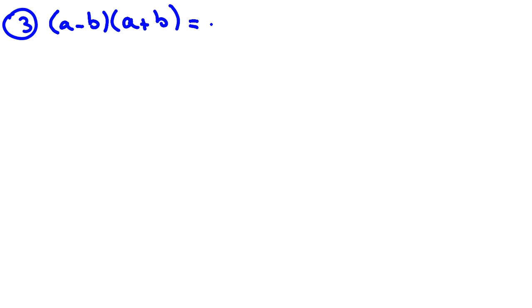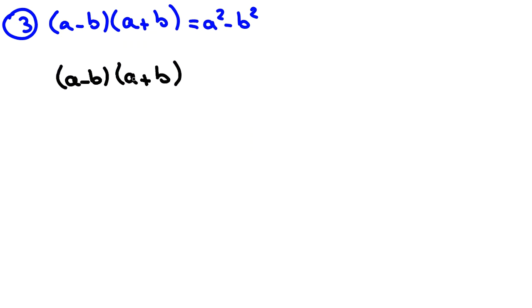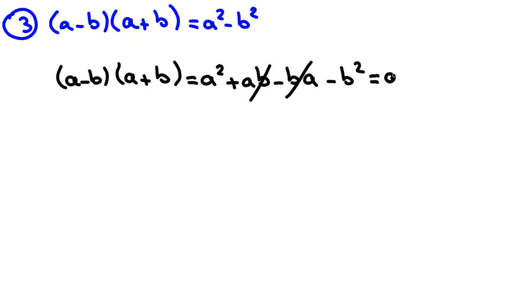Now, one more identity before solving the problem: the basic identity (A − B)(A + B) = A² − B². The proof: (A − B)(A + B) = A² + AB − BA − B² = A² − B², since AB and −BA cancel. We've proved this.